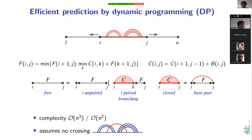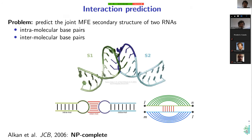Of course, there are some assumptions that allow this efficiency. We assume there are no crossings in the structure — all base pairs can be arranged in a non-crossing, tree-like fashion — which is a very useful approximation for RNA structures. Now, for interaction prediction specifically, we build on the same ideas. We predict base pairs in the optimal structure, but this time we want the joint minimum free energy structure of two RNAs — the complex with all intramolecular base pairs plus the intermolecular interaction base pairs.